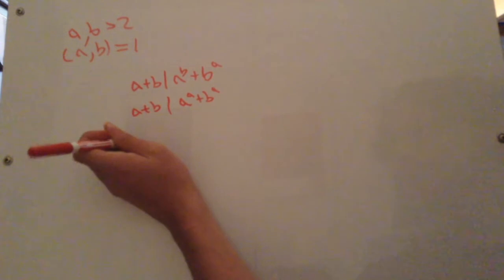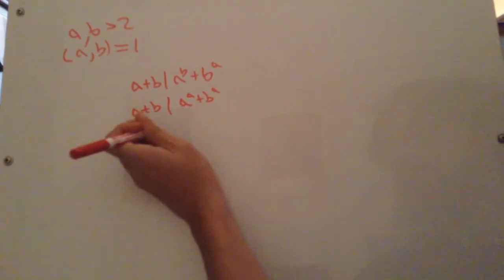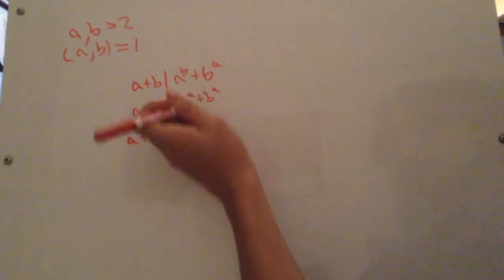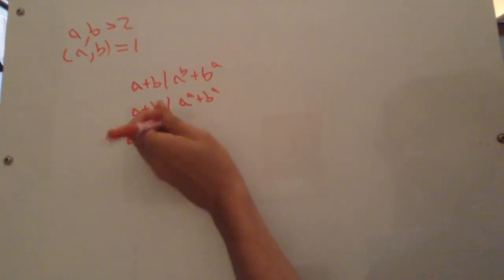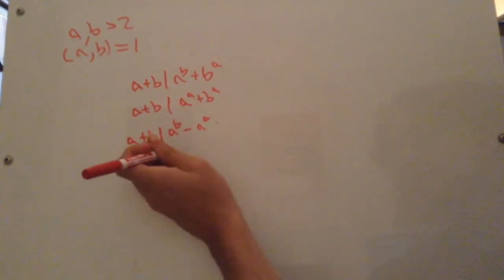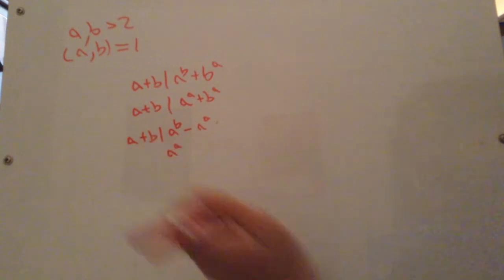So what we want to show now is a plus b divides the difference between these two, because if it divides this and it divides this, it'll divide the difference. a to the b minus a to the a, I'm going to factor out that a to the a really quick, and note that it doesn't really matter if a is bigger than b or not at this point.